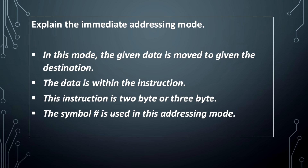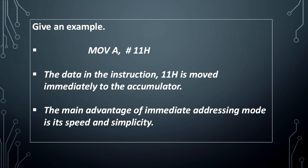In the immediate addressing mode, the given data is moved to the destination. The data is within the instruction. This instruction is 2-byte or 3-byte. The symbol hash (#) is used in this addressing mode.